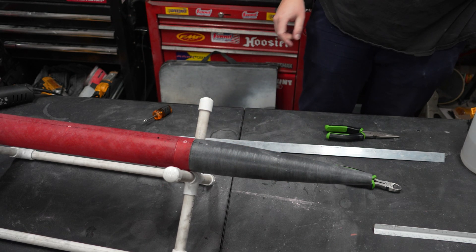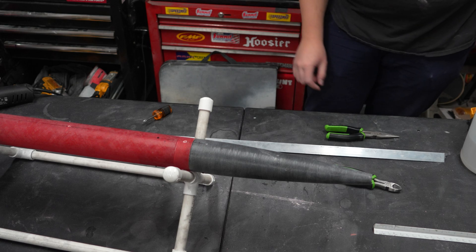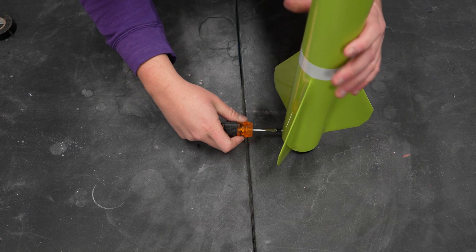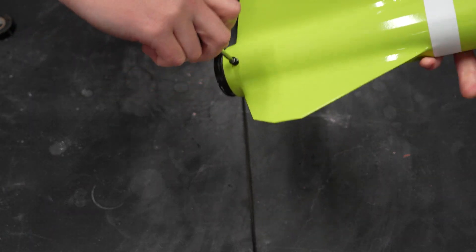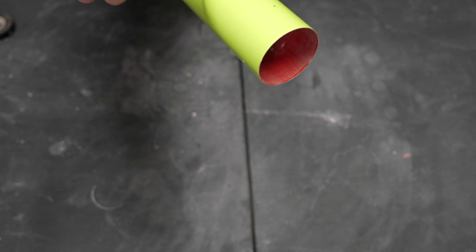Once all the holes are drilled and marked, either mask or remove your rail buttons and paint the rocket how you'd like. After the paint cures, replace the rail buttons and ensure they are sufficiently attached and cannot be wiggled or easily loosened by hand. You can add a dab of epoxy or CA to the screw threads in the bottom of the rail button to ensure a strong and secure fit if needed. This is extremely important because very bad things can happen if your rail buttons break loose on the pad. Ask me how I know, I dare you.